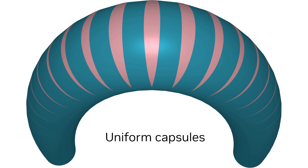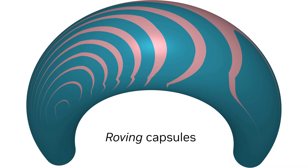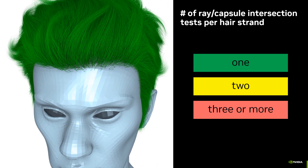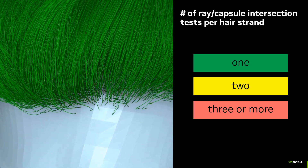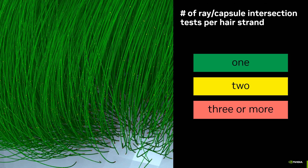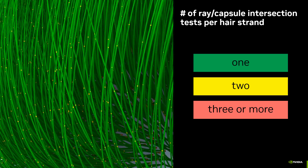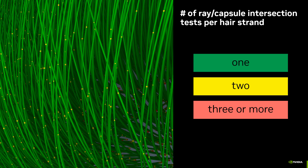Such uniform splits are also rather expensive. Instead, we assign capsules dynamically to each ray at runtime. A significant performance boost is achieved by systematically eliminating parts of the shape that are guaranteed not to intersect with the given ray. Let's see how many capsules we need to test for each hair strand for smooth rendering. Green indicates a single test, yellow means two, and red means more than two. You need to look pretty closely to see the red.